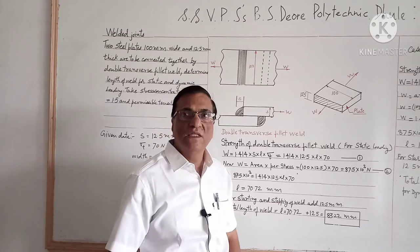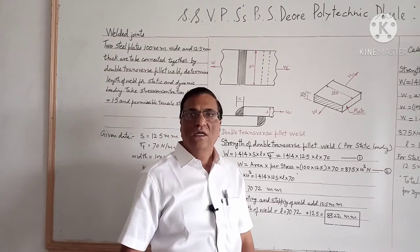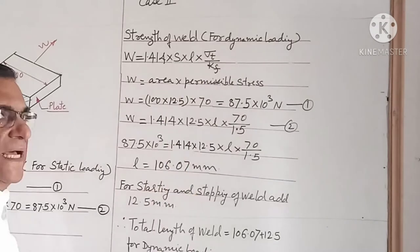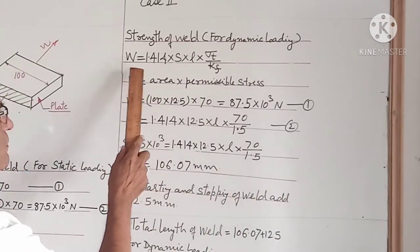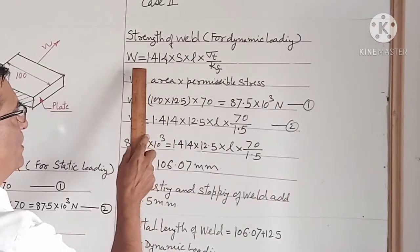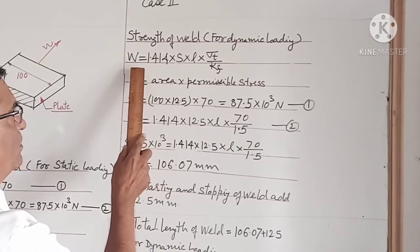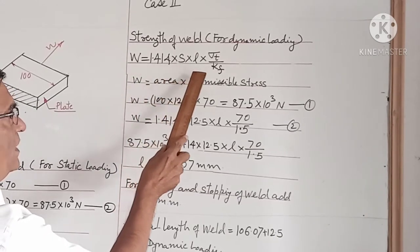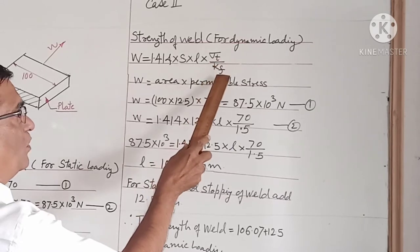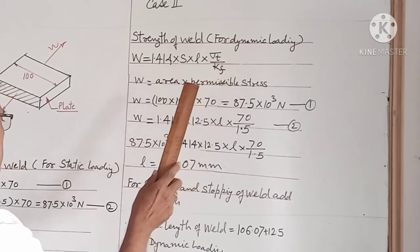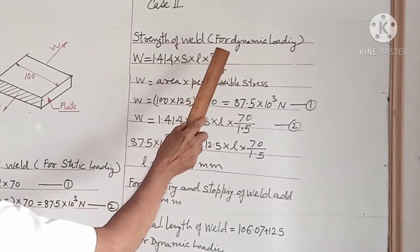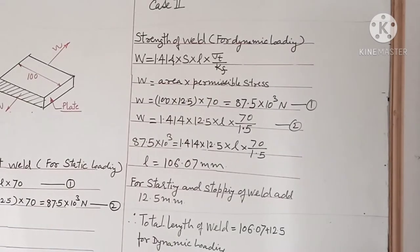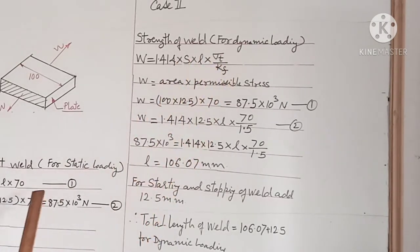Now we will determine the length of weld for dynamic loading. The strength of weld for dynamic loading is given by: W is equal to 1.414 into S into L multiplied by sigma T upon Kf. The difference from static loading is that we consider the stress concentration factor Kf.